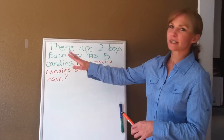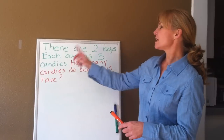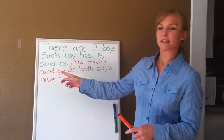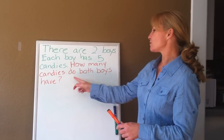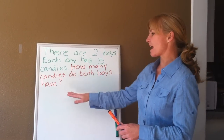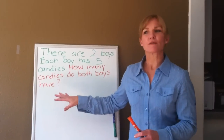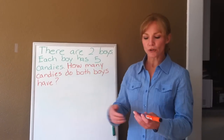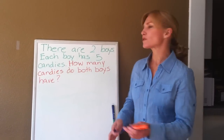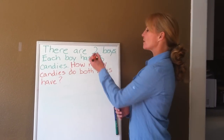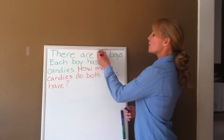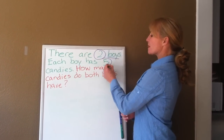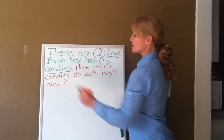And obviously it says there are two boys. Each boy has five candies. How many candies do both boys have? So the first thing that every child should do is circle the information that they need to know. So for example, we need to know about the two boys. We need to know that there are five candies.